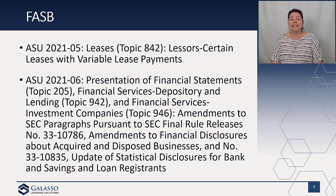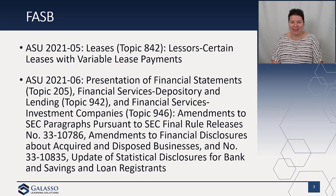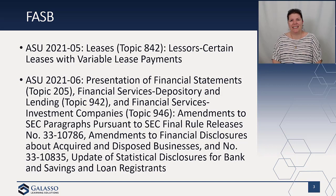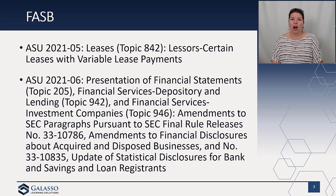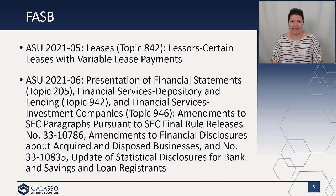On the FASB side, we did get a lesser change to ASC 842 — the leases standard, the gift that keeps on giving. They issued an amendment to address an issue related to lessor accounting. Under lessor accounting, we take the asset off the books and recognize a net investment in a lease if we have a sales-type or direct financing lease.